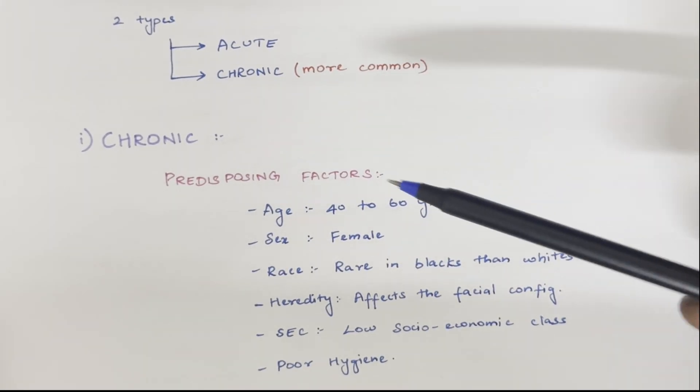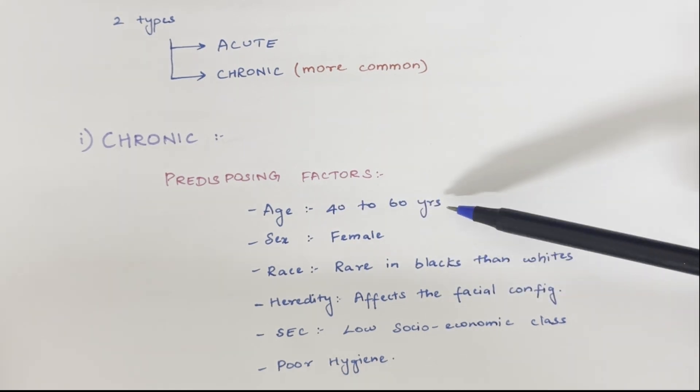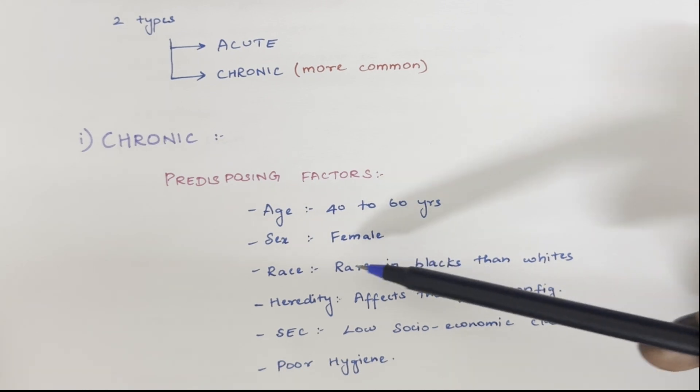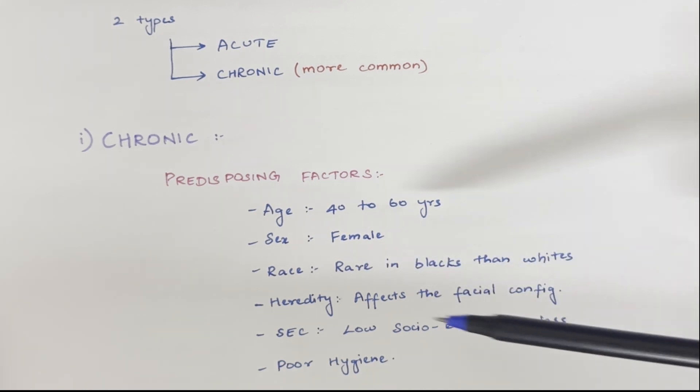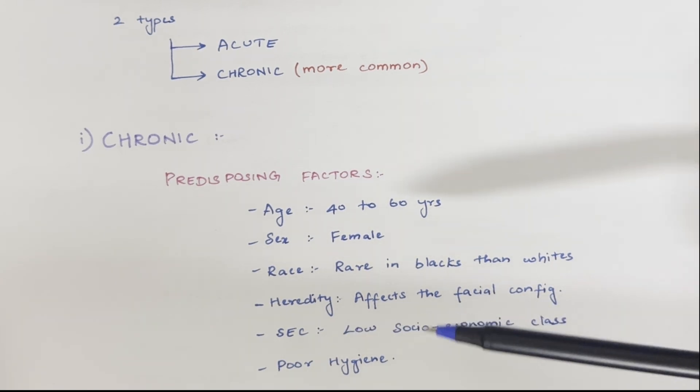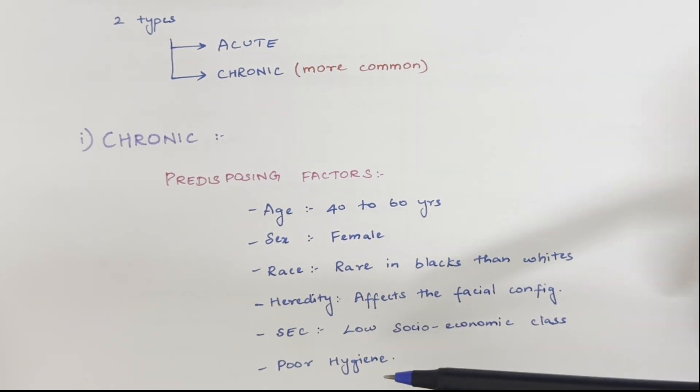Chronic dacryocystitis. Predisposing factors are 40 to 60 year old, female, it is rarer in blacks than whites, affects the facial configuration and it is usually seen in lower socioeconomic class and poor hygiene.